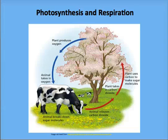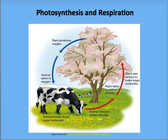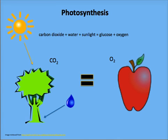Photosynthesis and respiration are two chemical processes without which life on earth could not exist. Photosynthesis occurs in the chloroplasts of plant cells when carbon dioxide and water react to form food in the form of glucose and oxygen. The reaction harnesses energy from the sun and cannot occur without sunlight.